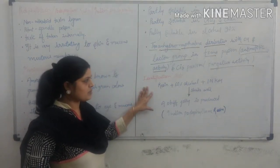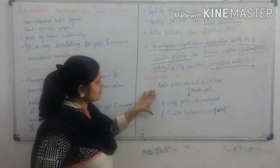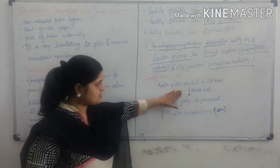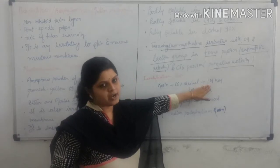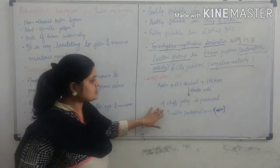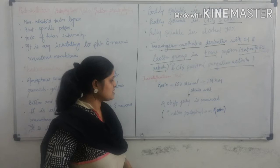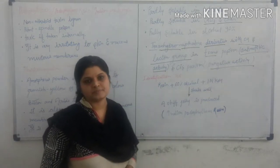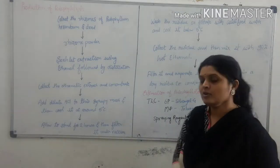Identification tests for podophyllum: Resin test - resin drug taken and add 60% alcohol, then add one normal potassium hydroxide, then shake it. A stiff gel is produced which indicates presence of Indian podophyllotoxin. Picric acid test - it is a chemical test for podophyllotoxin.